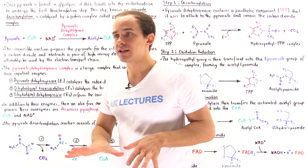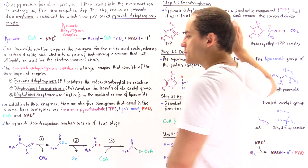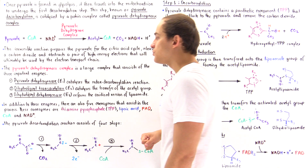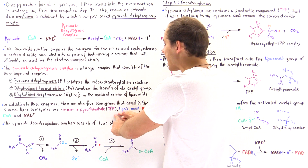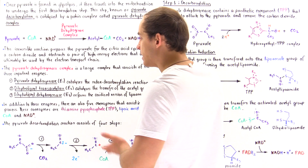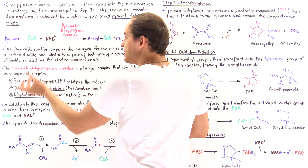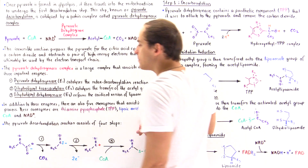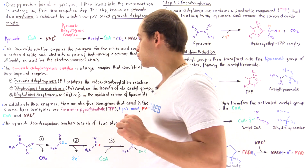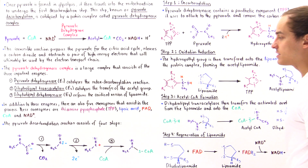The five coenzymes used by this complex are: thiamine pyrophosphate (TPP), a prosthetic group used in step one; lipoamide, a derivative of lipoic acid; coenzyme A, which acts as the carrier molecule for the two-carbon acetyl group; FAD (flavin adenine dinucleotide), which picks up two electrons; and NAD+, which receives those electrons to form NADH in the final step.